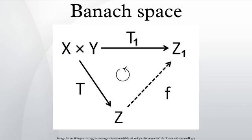Basic examples of Banach spaces include the ℓp spaces and their special cases, the sequence spaces ℓp that consist of scalar sequences indexed by ℕ. Among them, the space ℓ1 of absolutely summable sequences and the space ℓ2 of square-summable sequences. The space c₀ of sequences tending to zero and the space ℓ∞ of bounded sequences. The space C(K) of continuous scalar functions on a compact Hausdorff space K, equipped with the max norm. According to the Banach–Mazur theorem, every Banach space is isometrically isomorphic to a subspace of some C(K).